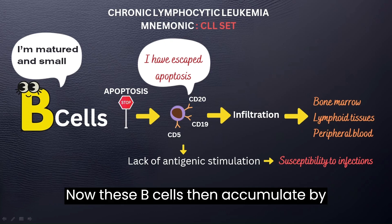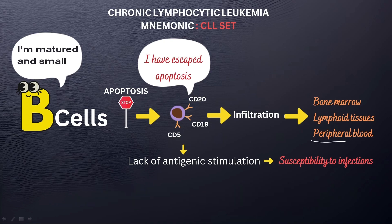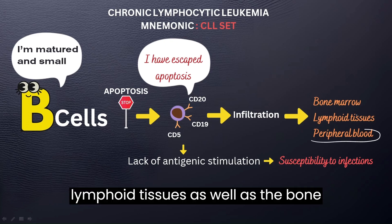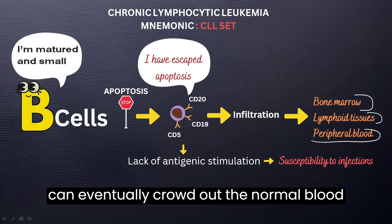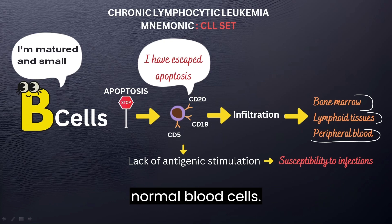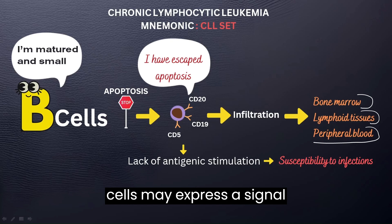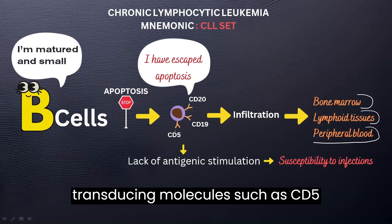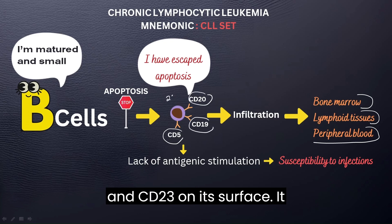These B cells then accumulate by infiltrating the peripheral blood, the lymphoid tissues, as well as the bone marrow. And what can happen is that they can eventually crowd out the normal blood cells, or even impair the production of normal blood cells. Now, these chronic lymphocytic leukemic cells may express signal transducing molecules such as CD5, CD19, CD20, and CD23 on their surface.